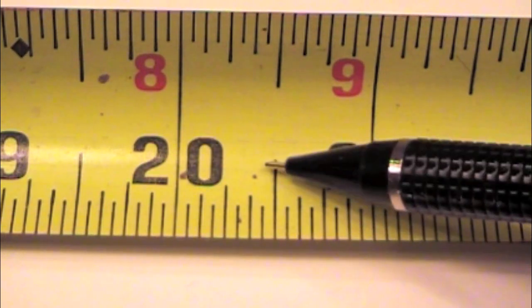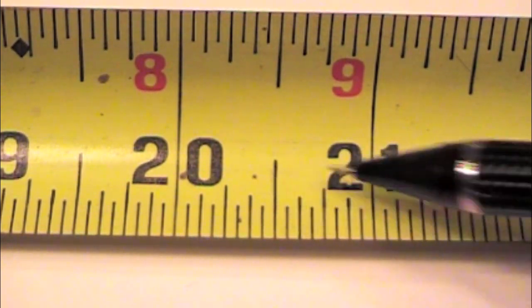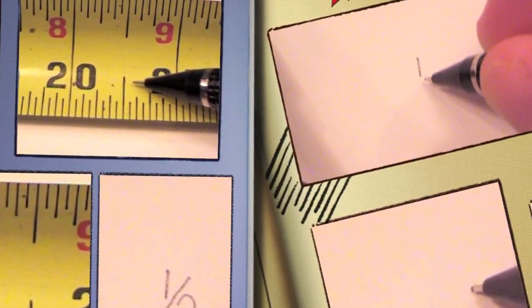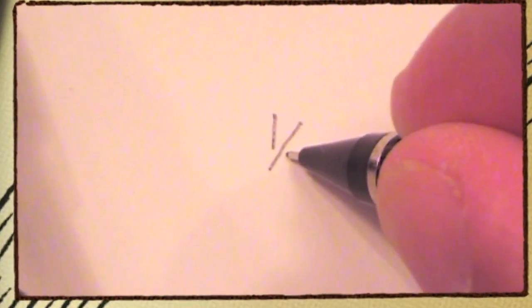Tape measures are a wonderful tool to learn fractions, two divisions. So from zero, half, to one. We're dividing it into two. Which ends up being one, slash, two. Half an inch.